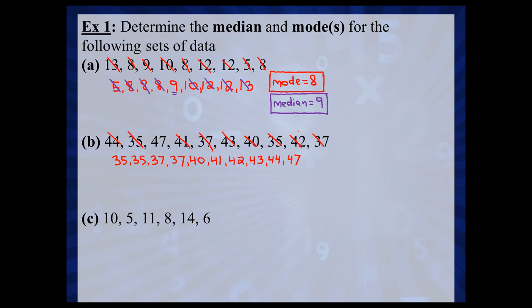Looking at the data set, let's identify the mode first. The mode is the most frequently occurring number. In this case, there's a tie — 35 occurs twice and 37 also occurs twice. Every other number occurs just one time. It is possible to have two modes when there's a tie for the most frequently occurring numbers. In this case, you'd have two modes: 35 and 37.